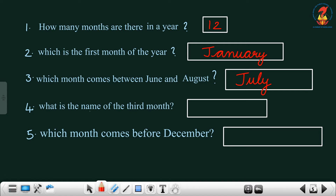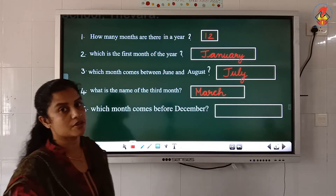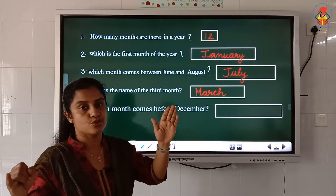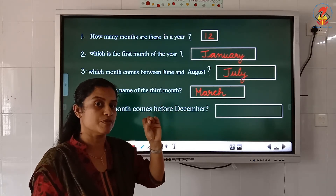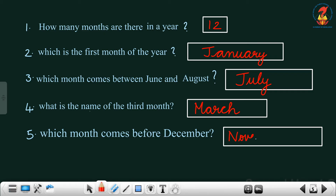Fourth question: what is the name of the third month? January, February, March — so which is the month? March. You have to write the spelling: M-A-R-C-H, March. The last question: which month comes before December? Counting — January, February, March, April, May, June, July, August, September, October, November, December. So which month comes before December? November. The spelling is N-O-V-E-M-B-E-R. Understood, children?